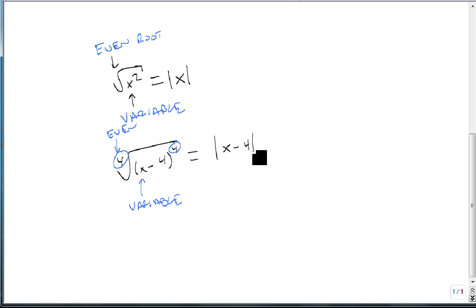What about the fifth root of (3x - 2)^5? We notice the fives match, but this time it's odd. So even though we have a variable, because it's odd, this comes out as simply 3x - 2. Notice the distinct lack of absolute values.